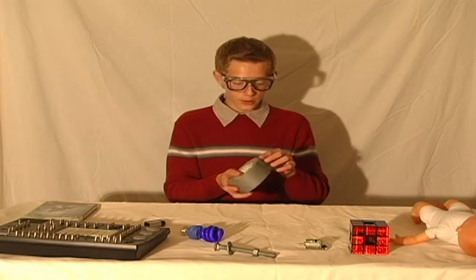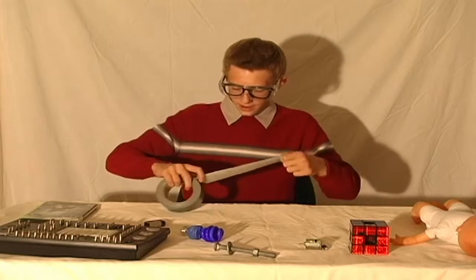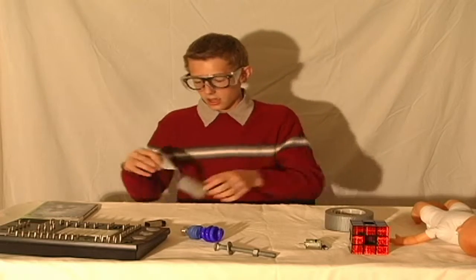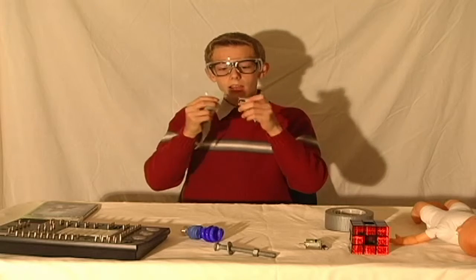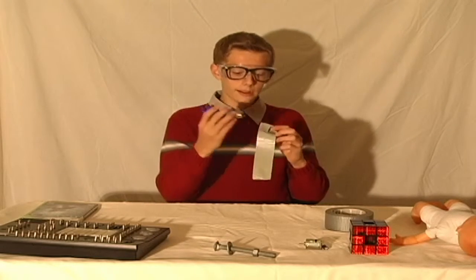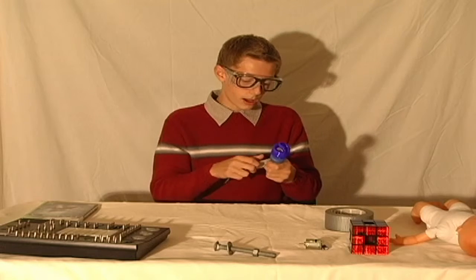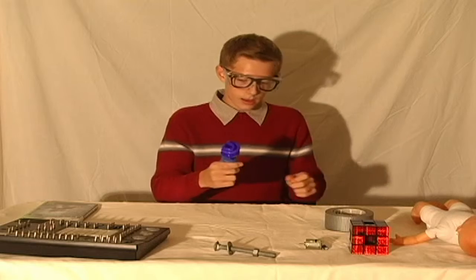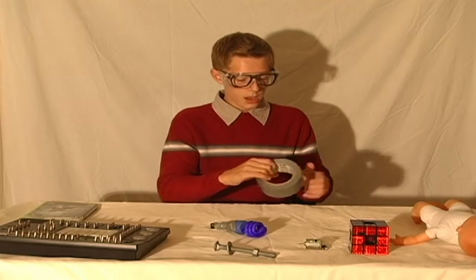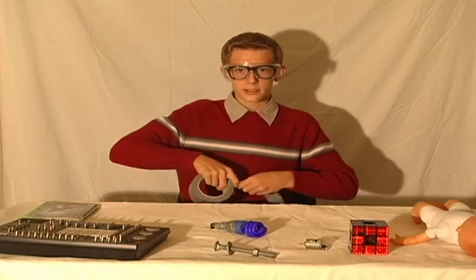You want to take your roll of duct tape, rip off a piece, take the battery, take the blue light, and attach it so that it will glow. Then, once you have this part done, you're going to rip off another piece of duct tape.